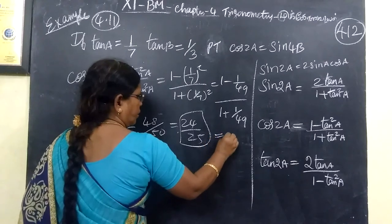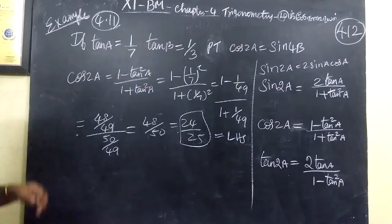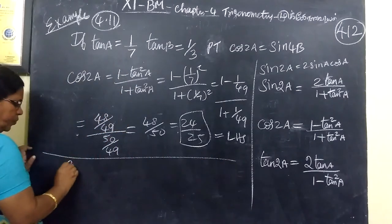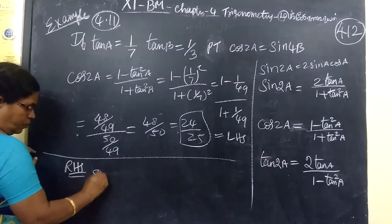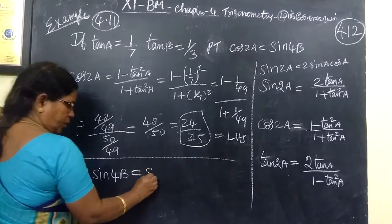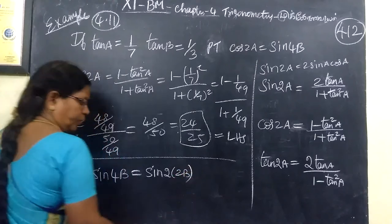So, this is what we call LHS. RHS is the same answer we should get. So, consider RHS. RHS is sin 4B. Sin 4B is sin 2 times 2B.